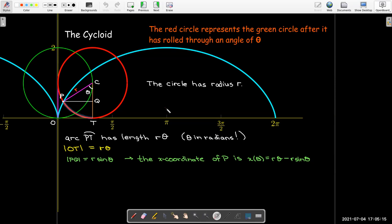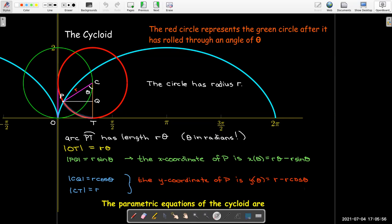What about the y coordinate? Well, I know from, again, on my right triangle, the length of CQ. Now CQ is adjacent to the angle theta. So the length of CQ is going to be R cosine theta. And since CT is a radius, its length is R. So put those together. The y coordinate of point P is going to be that radius minus CQ. So R minus R cosine theta. So the parametric equations of the cycloid are x of theta equals R parenthesis theta minus sine theta. Y of theta equals R parenthesis 1 minus cosine theta.